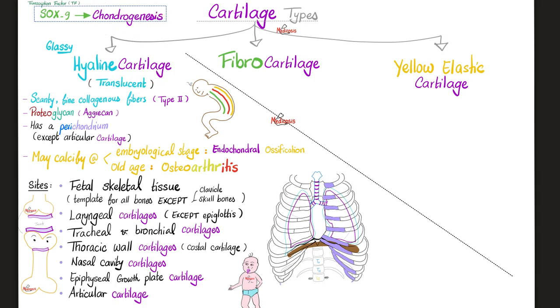Hyaline cartilage: they are glassy and translucent, that's why we call them hyaline. Why are they glassy and translucent? Because they have scanty, fine collagenous fibers — this is type 2 collagen.